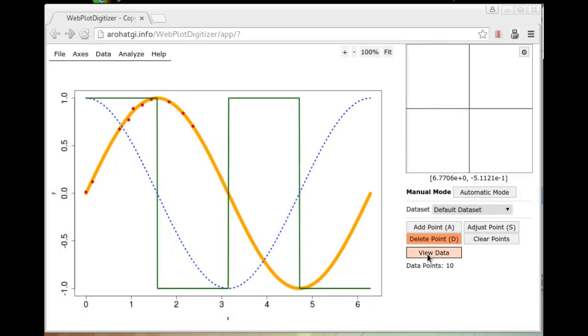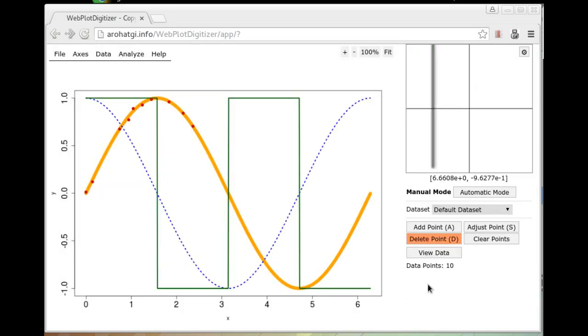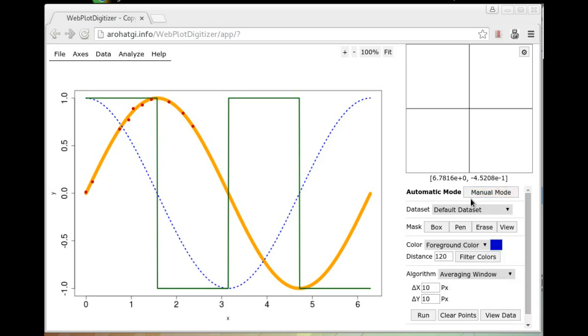Once you're satisfied with the points, click on view data to view the actual data that you have collected. I will return to this dialog box and explain these controls in a bit. Now the manual mode can get very tedious for large number of data points. And so you might want to switch to the automatic mode. The automatic mode requires a few inputs to identify the useful region of the image and also the color of the features that you are interested in.